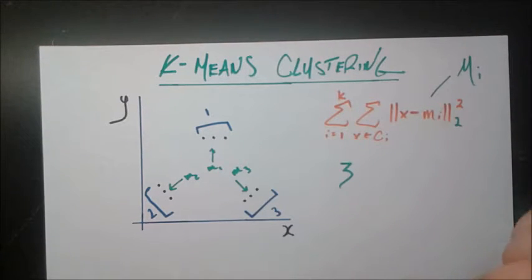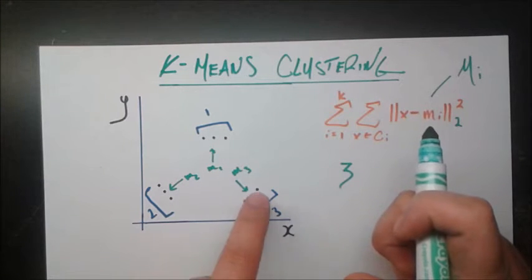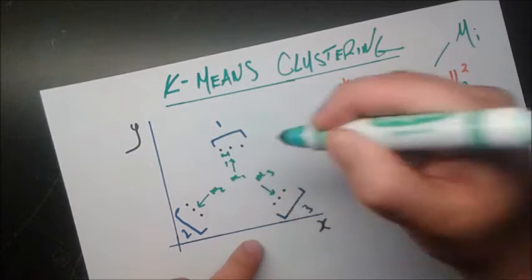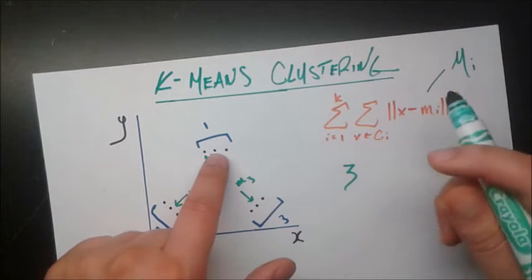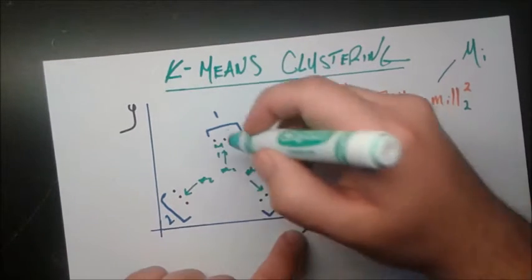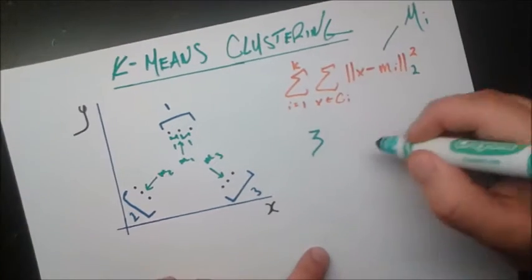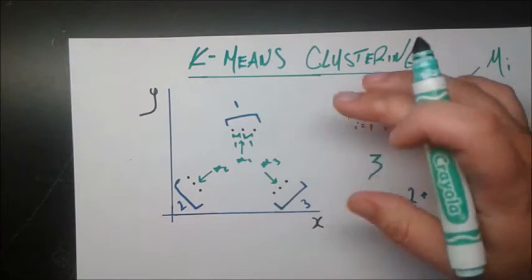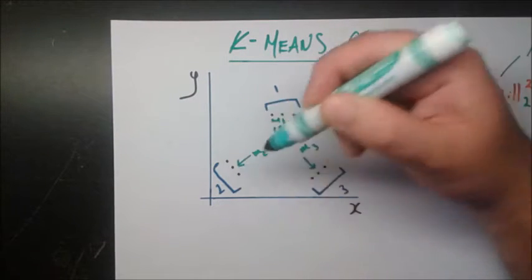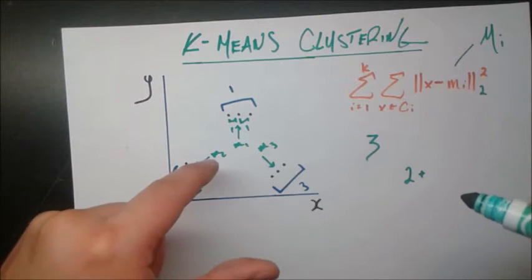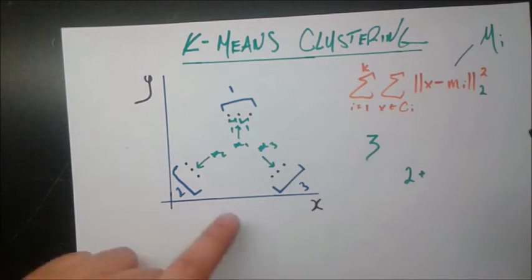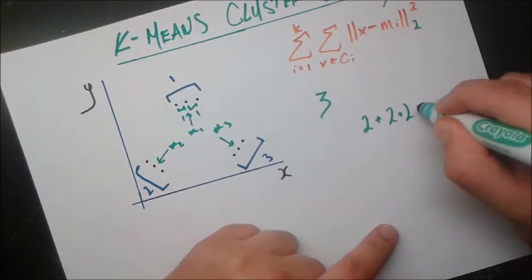Let's do it concretely. Given that the midpoints are m1, m2, and m3, in cluster one the distance from the left point to the middle is one, and the distance from the right point to the middle is also one, giving a sum of two. By symmetry, it's the same for all clusters: two plus two plus two equals six. When distances aren't one — say a distance of two — we'd compute two squared equals four as the component instead.